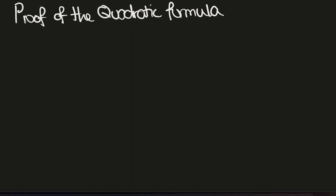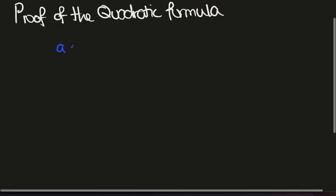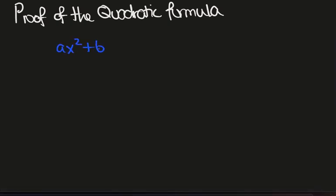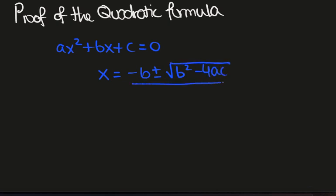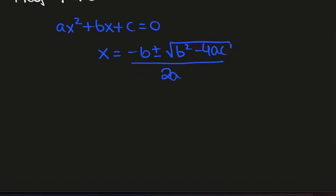In this video we want to look at the proof of the quadratic formula using the method of completing the square. The quadratic formula says that if we have a quadratic polynomial ax squared plus bx plus c equals zero, then the solutions of this equation are given by negative b plus or minus the square root of b squared minus 4ac over 2a. So let's see how we could prove this.